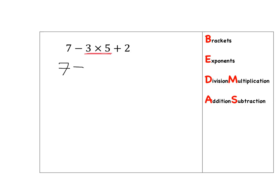I do that multiplication: the 7 I don't touch, then I work out 3 times 5, which gives me 15, and then the 2 I haven't touched yet. Then I need to check: is there any more division or multiplication to do? No, so now I can move on to addition and subtraction.